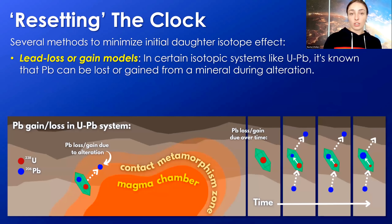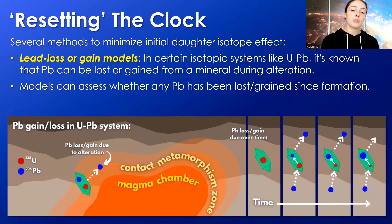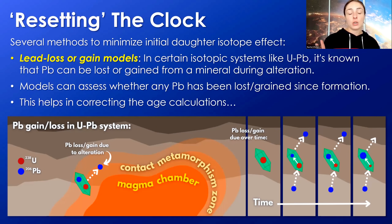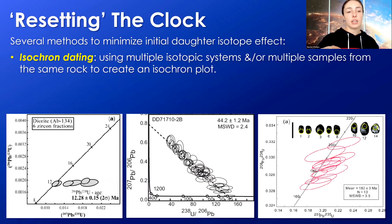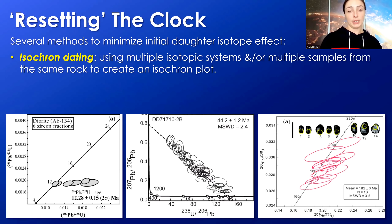We can also run lead loss or gain models. In certain isotope systems like the uranium-lead system, it's known that lead can be lost or gained from certain minerals during alteration. Models can therefore assess whether any lead has been lost or gained from the system, and this helps in correcting age calculations.